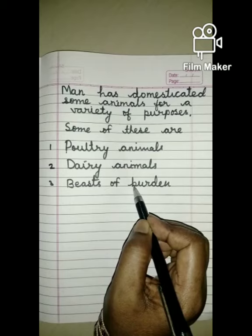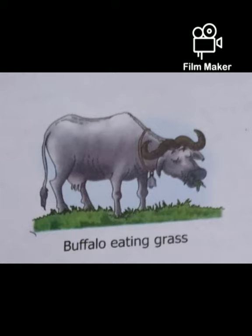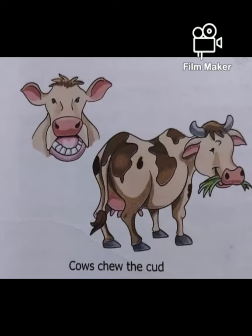So this is your third chapter. Now, buffalo is a herbivorous animal. This buffalo eats only plants and grass, so that's why buffalo is known as a herbivorous animal. Most herbivorous animals swallow their food first then chew it later. See the picture carefully how cows chew the cud - cow and buffalo first swallow the food and then chew it properly. They make use of their tongue to move food inside the mouth.